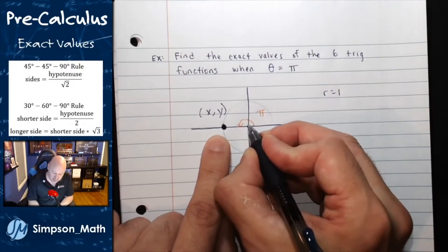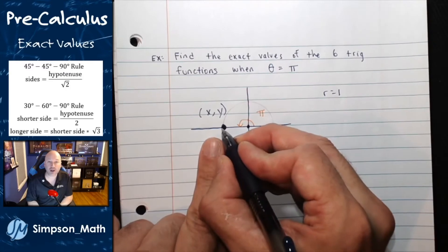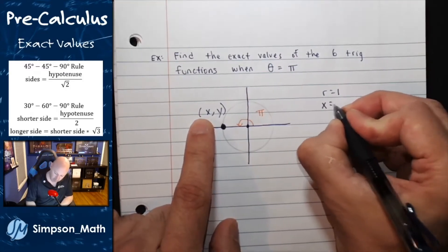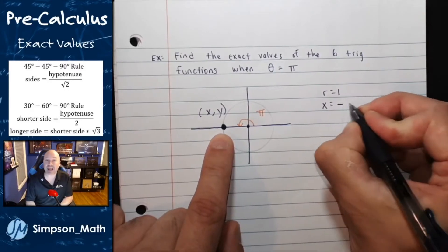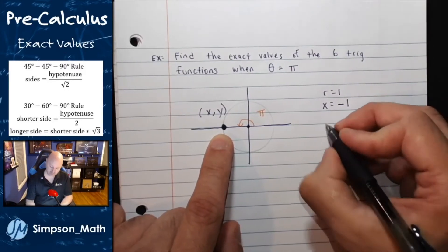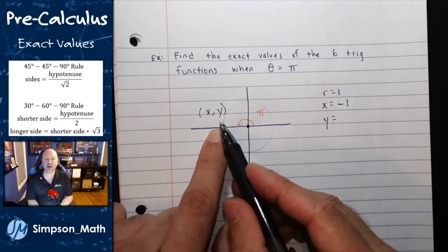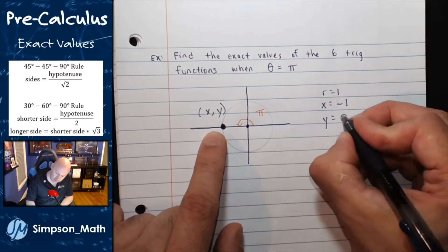If I start from the origin and go this direction 1, what is that x value? Well, hopefully you see it's a negative 1. And the y, what would be the y value here? I don't go up or down, so this is going to be 0.